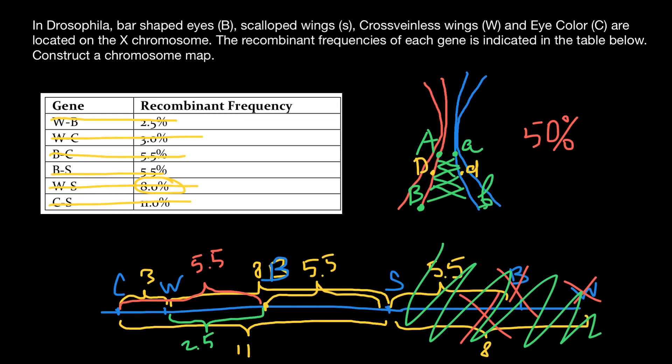So again, the gene order is going to be gene C, then gene W, then B, and then S.